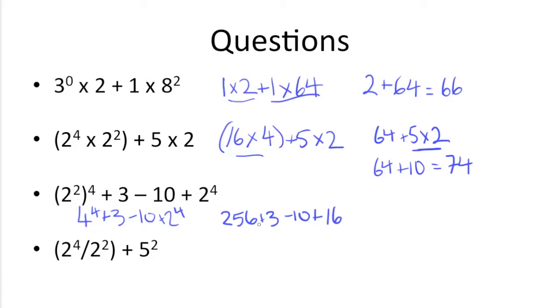Now we have addition and subtraction here, so we can just go left to right. So 256 plus 3 is 259, minus 10, plus 16, and then we get 249 plus 16, which gets us 265.